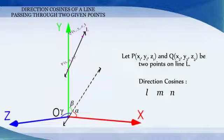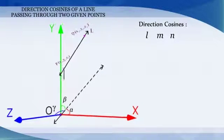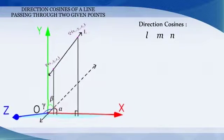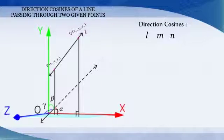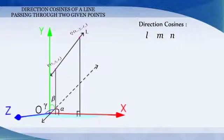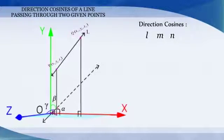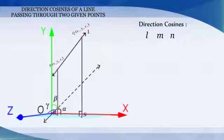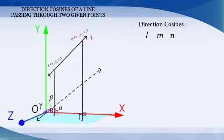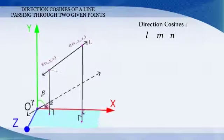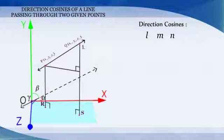Draw perpendiculars from P and Q to xz plane. Let these perpendiculars meet xz plane at R and S respectively. Draw a perpendicular from P to QS to meet QS at N.